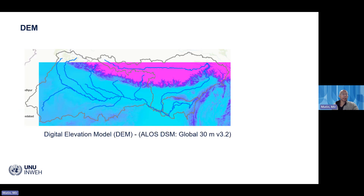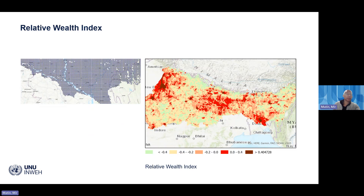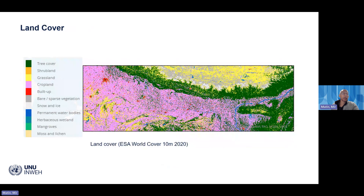Examples of the datasets include the digital elevation model from ALOS at 30-meter resolution. The relative wealth index developed by Meta is a 2.4-kilometer gridded relative wealth analysis available for the whole world, which we use for vulnerability analysis. For land cover, we use a global 10-meter land cover dataset for identifying crop areas exposed to flood.